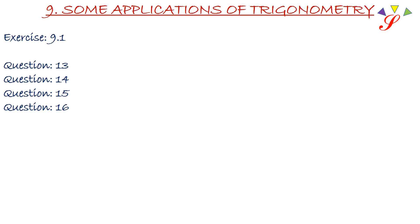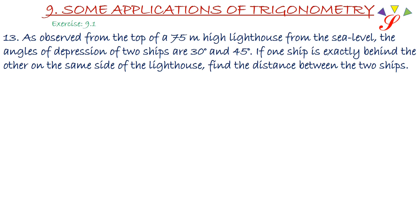This part contains question number 13, 14, 15 and 16 of exercise 9.1. As observed from the top of a 75 meter high lighthouse from the sea level, the angles of depression of two ships are 30 and 45 degrees. If one ship is exactly behind the other on the same side of the lighthouse, find the distance between the two ships.